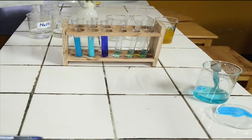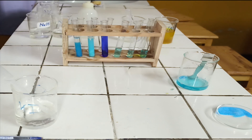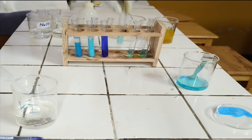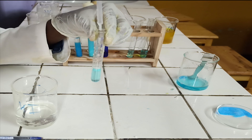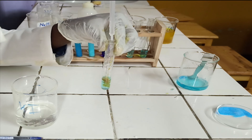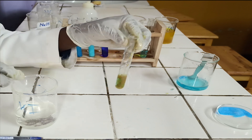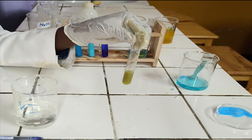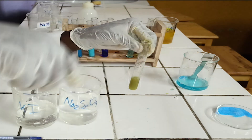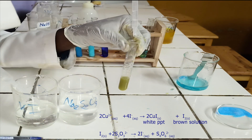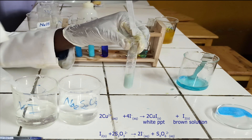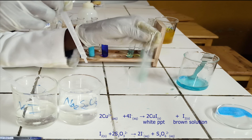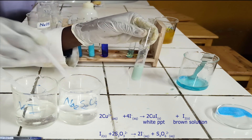Second confirmatory test. To the fourth test tube, add a few drops of potassium iodide solution followed by sodium thiosulfate. As you see, potassium iodide reacts with copper-2-ion to form a white precipitate and iodine, which appears as a brown solution. Iodine produced reacts with sodium thiosulfate, then the brown color of iodine is removed. A white precipitate of copper-1-iodide remains in the test tube. Below, there is the ionic equation for this reaction.